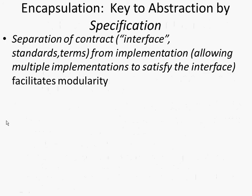A key for reducing complexity associated with software development is the notion of separating out an interface from an implementation — separating out the contract, what's promised by a method or by its name, from how it's actually implemented. And we'll see this plays out big time in classes, and you'll see it used across AnyLogic.